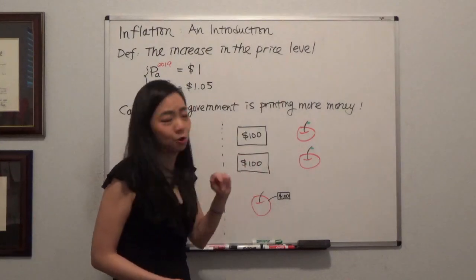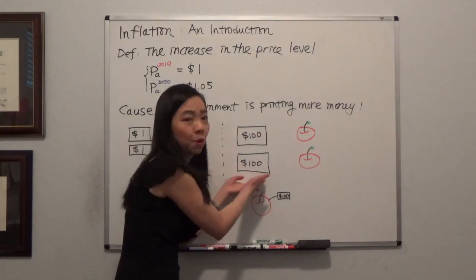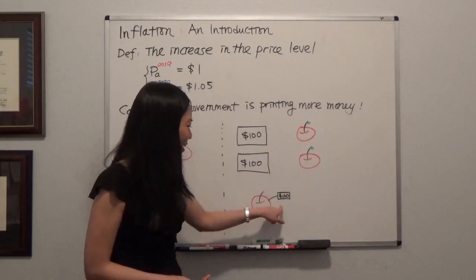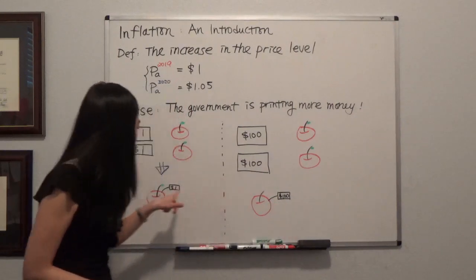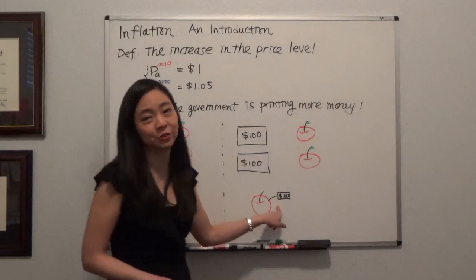So now, what is the price tag of the apple? Well, even though you have more money, you still only have two apples. So the price tag of the apple will be a hundred dollars. You see, the price of an apple has increased from a dollar to one hundred dollars.